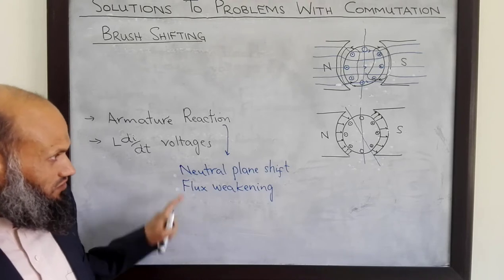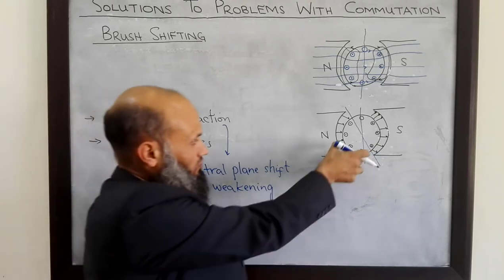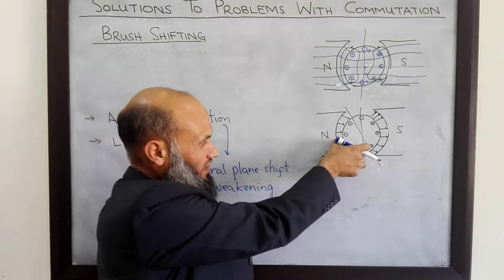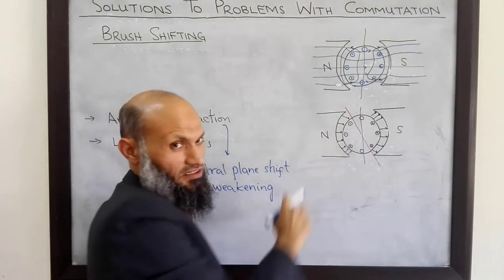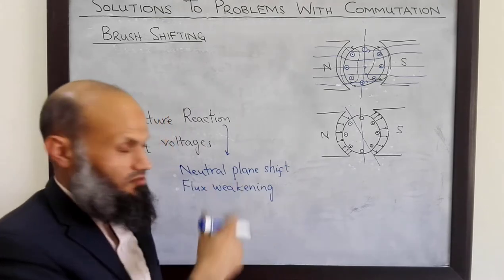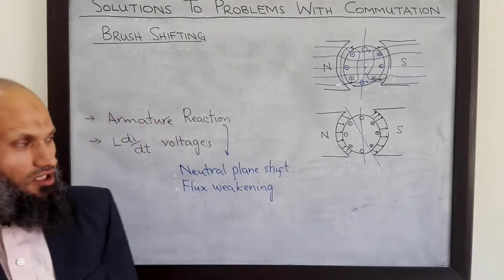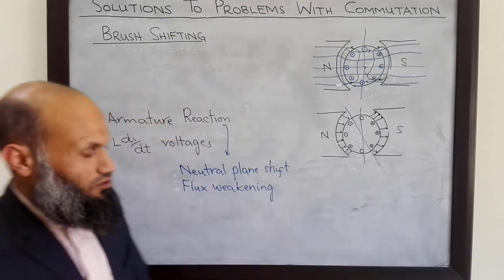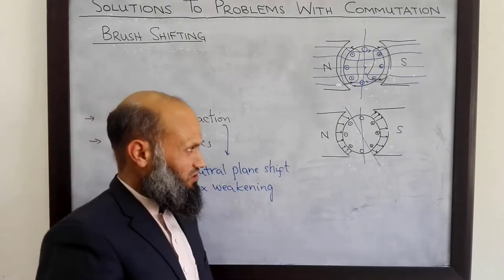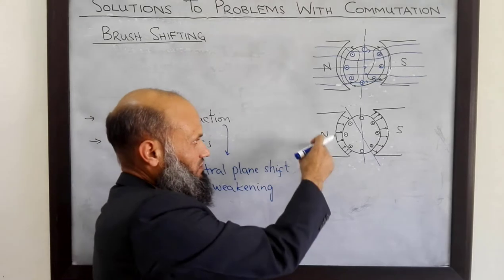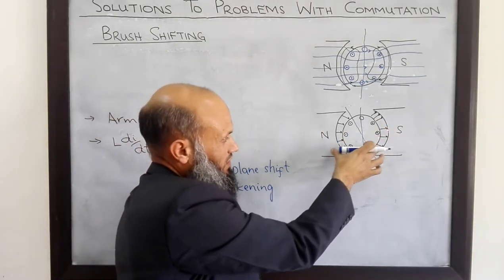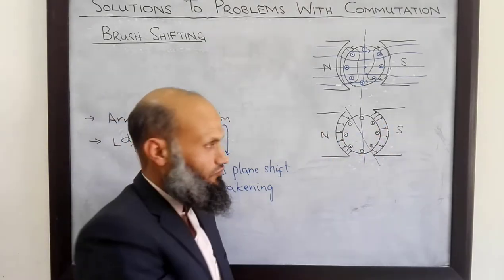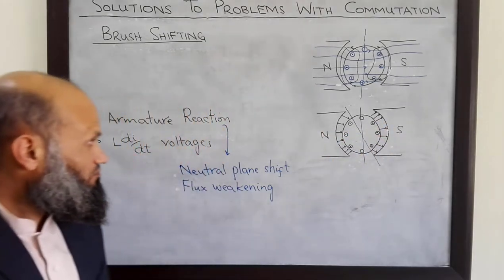The second effect is flux weakening. Although MMF at one end of the pole is increased and at the other end is decreased, the net MMF is the same. However, due to the saturation effect, as we discussed earlier, the net flux in the machine will be decreased.